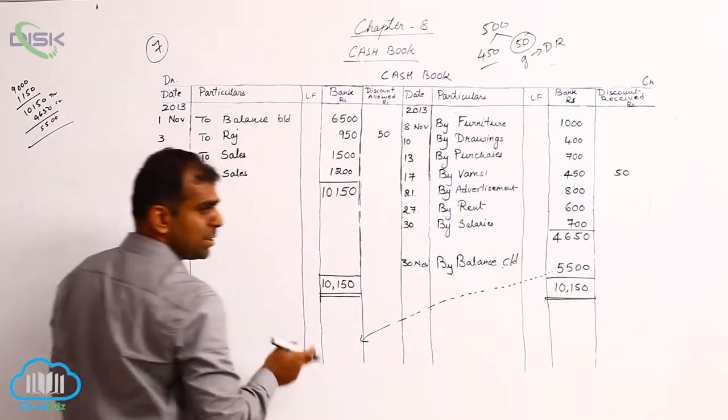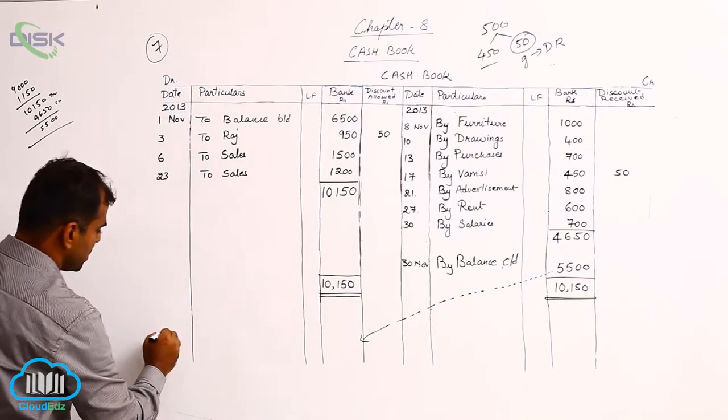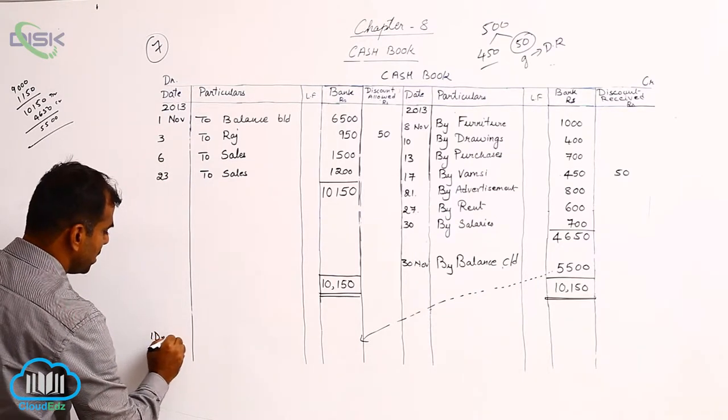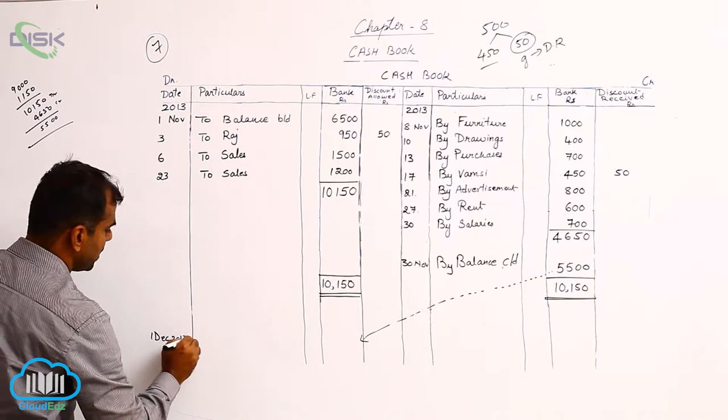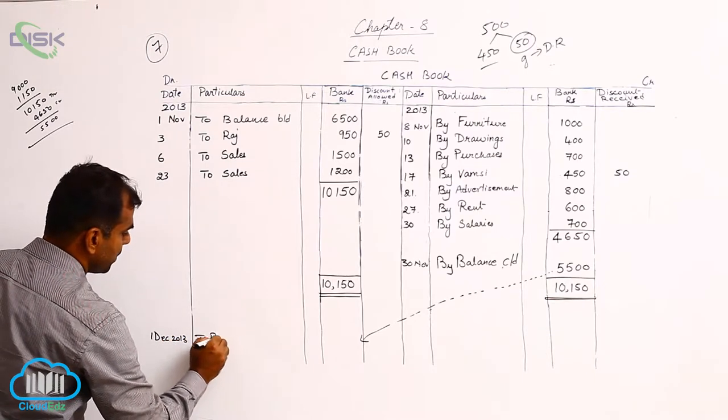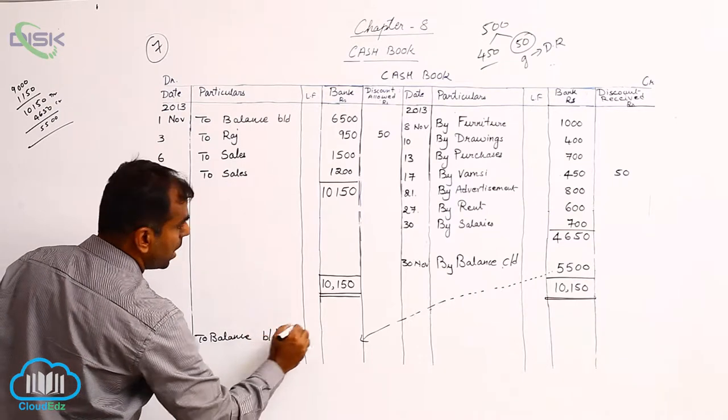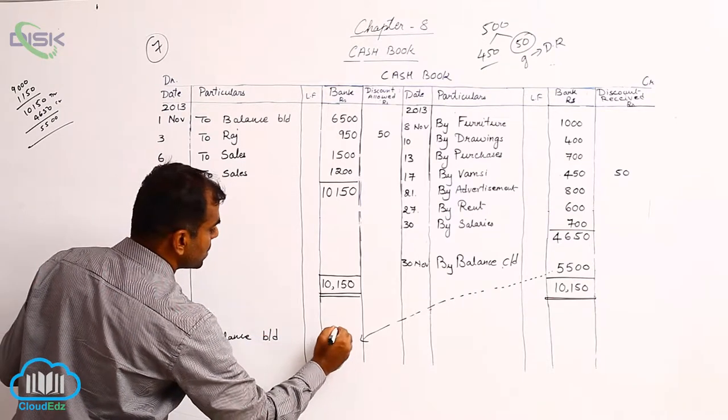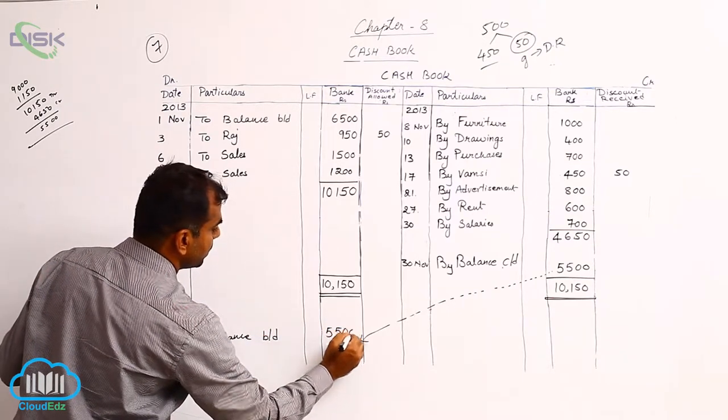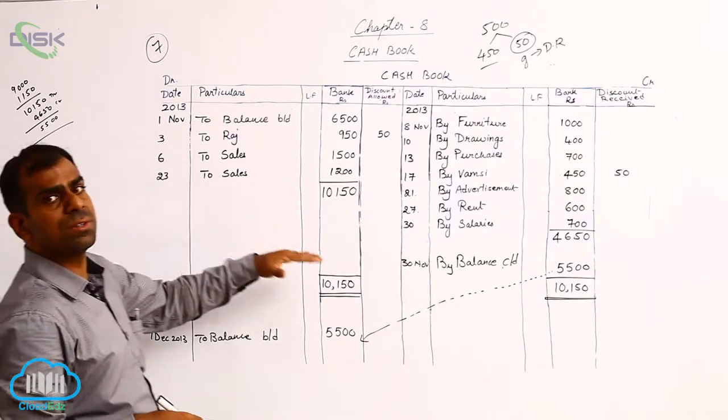This is only an indication you need not draw that line. So it is on 1st December 2013 to balance. Since it's opening write brought down and 5,500. That is how you closed your bank column.